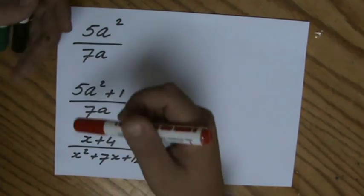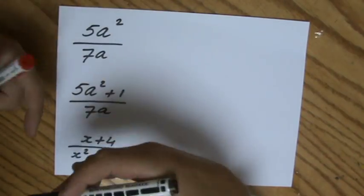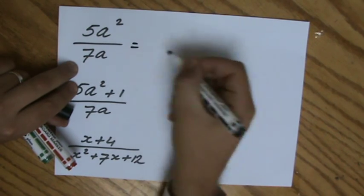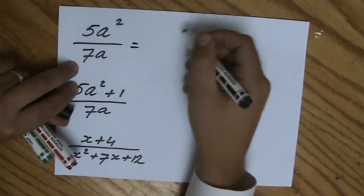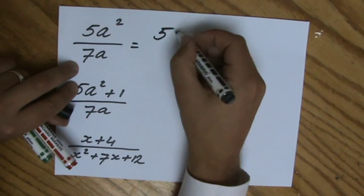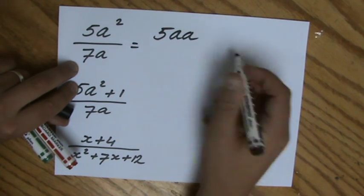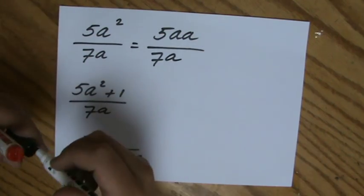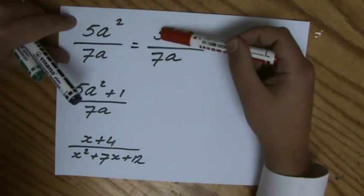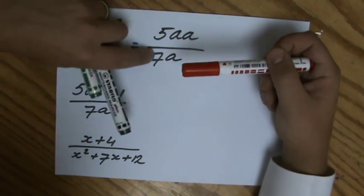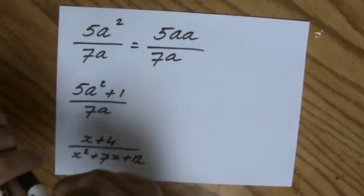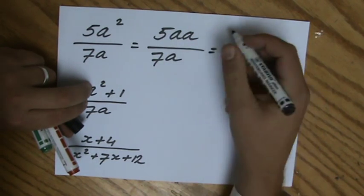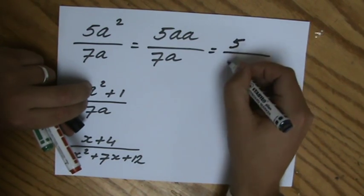Now the first one, 5a squared over 7a. The highest common factor of all terms is what you want to get out when simplifying. 5a squared is actually 5 times a times a over 7a. If I look at the numbers, the coefficients, is there a common factor? 5 over 7, is there a number you can divide both by? I don't think so. So I can just leave 5 and the 7 there.